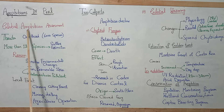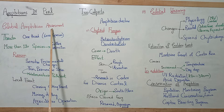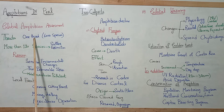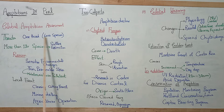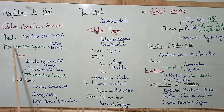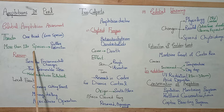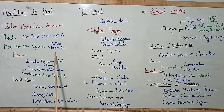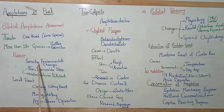The Global Amphibian Assessment shows that one third — about 6000 species — are threatened with extinction. More than 120 species have already gone extinct in the last 25 years, according to Miller's Zoology.